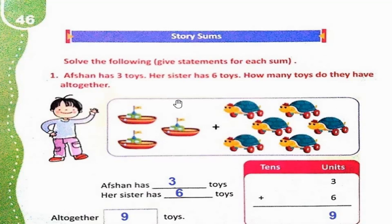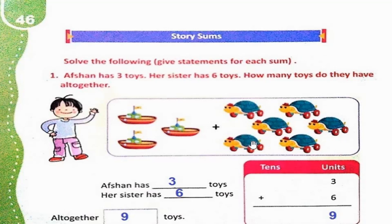Now we have to find how many toys they have altogether. So we have 3 to add to 6. Counting: 1, 2, 3, 4, 5, 6, 7, 8, 9. So the total number of toys they have is 9.